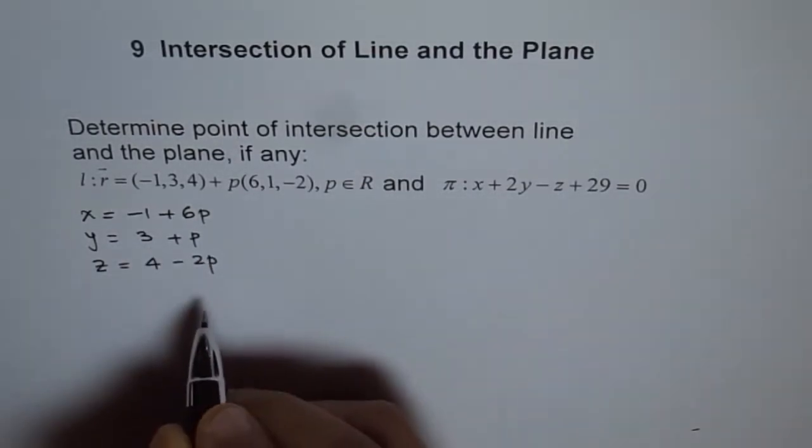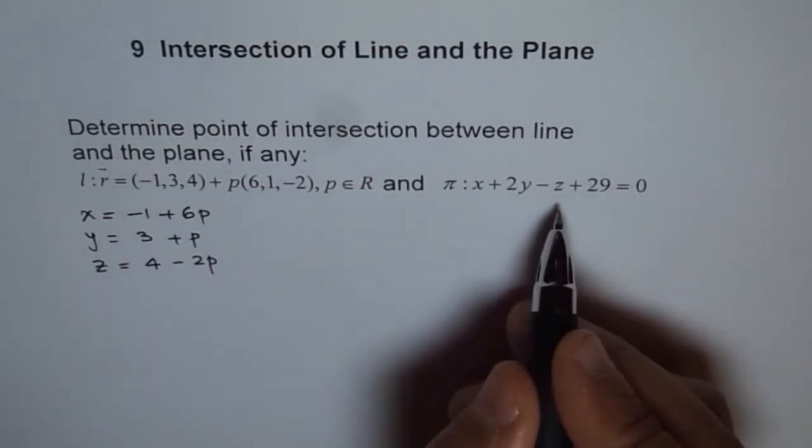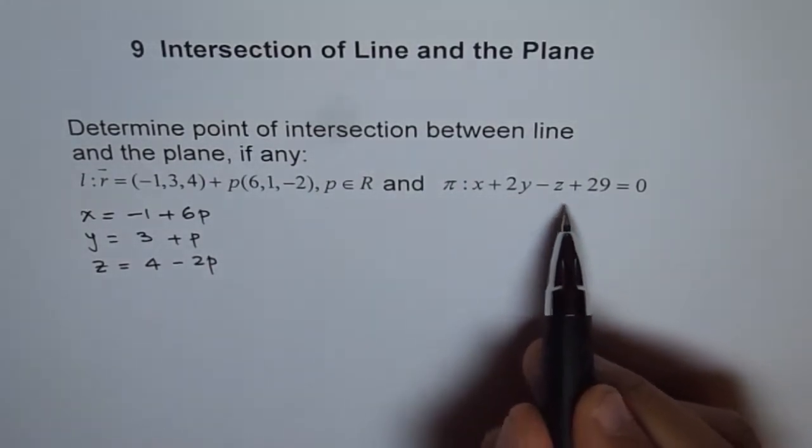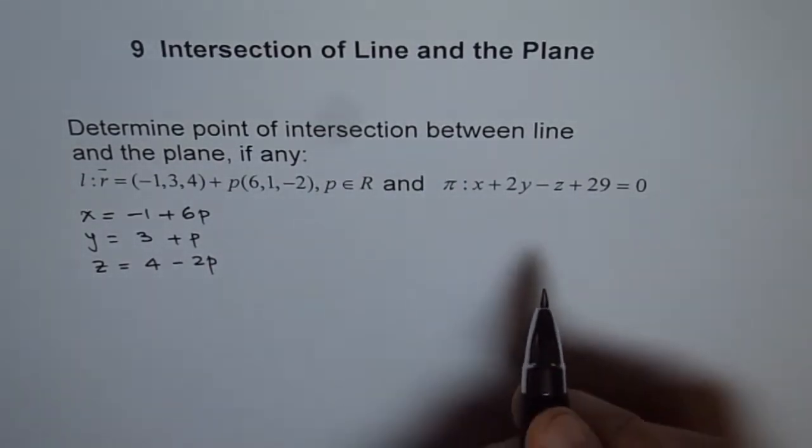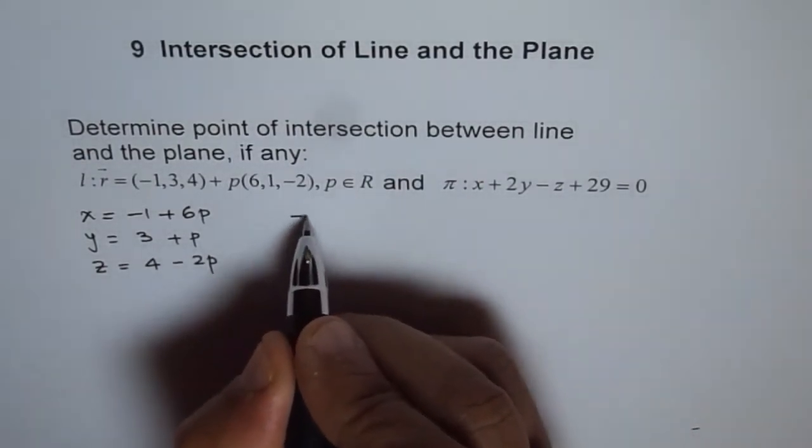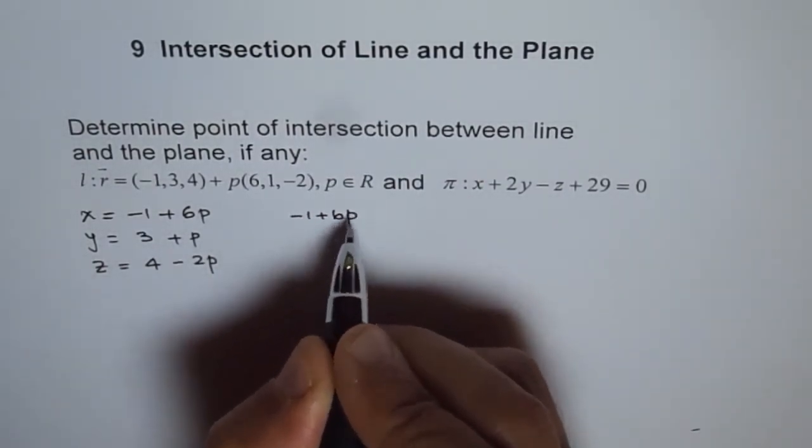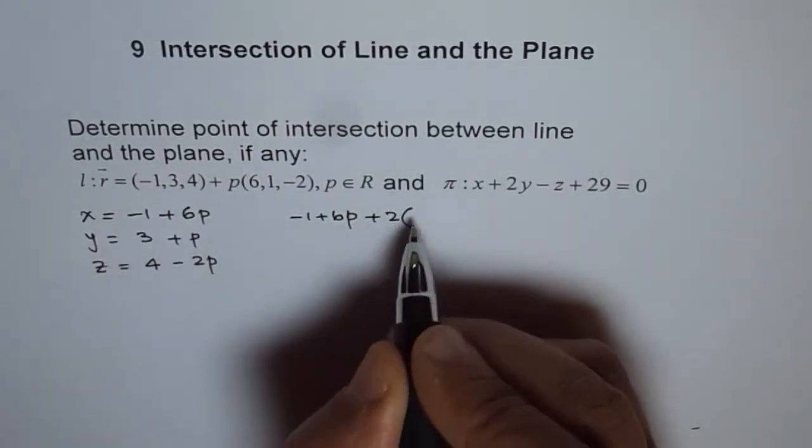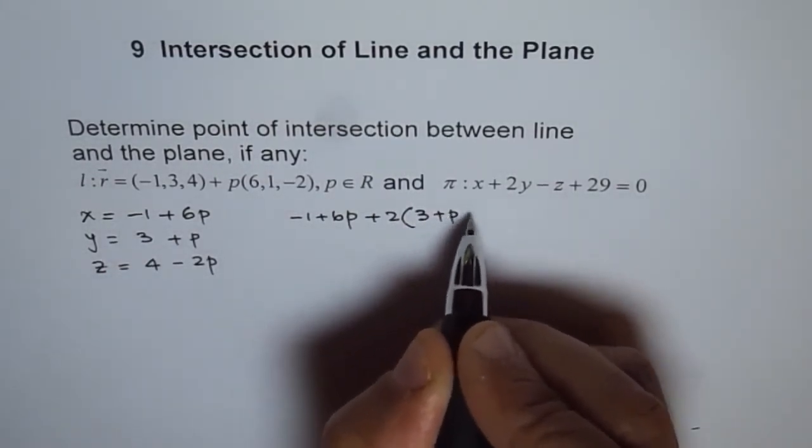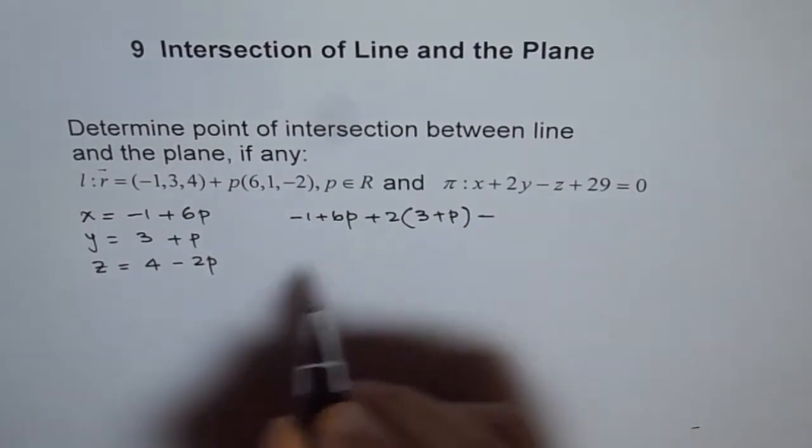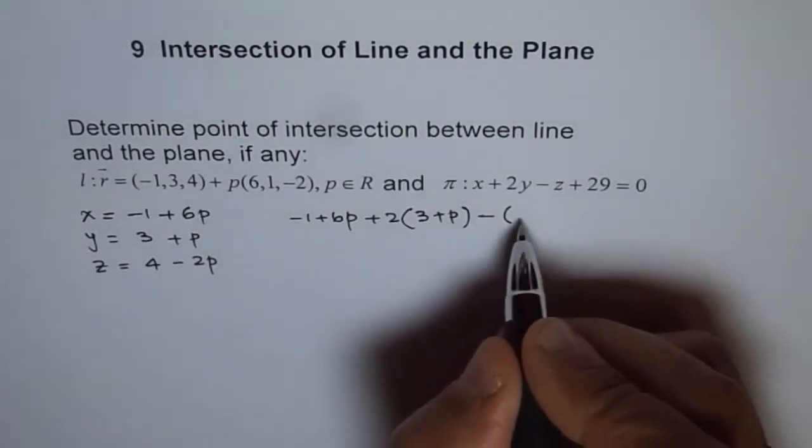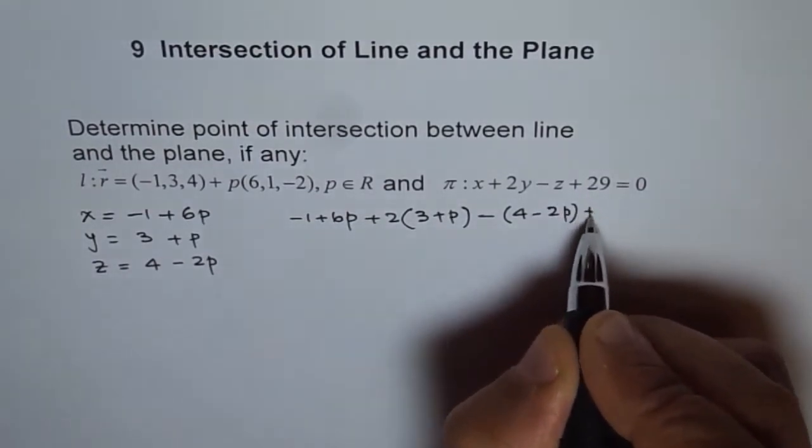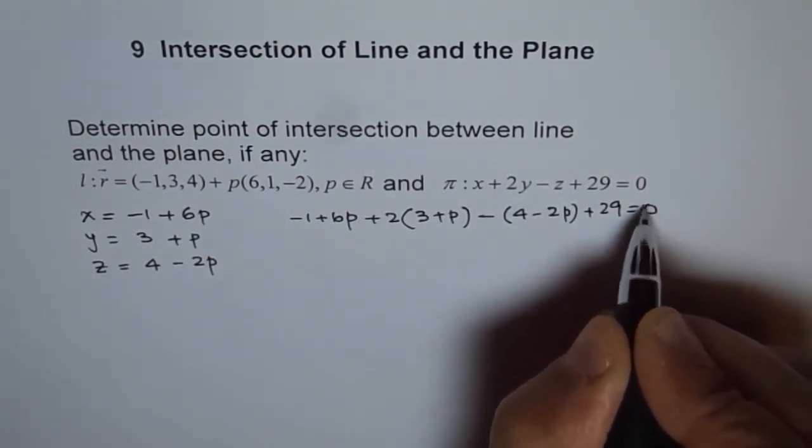So we'll plug these points in our equation for the plane, which is x + 2y - z + 29 = 0. So instead of x, we can write -1 + 6p + 2 times, instead of y, I'll write 3 + p, minus z, instead of z, we'll write 4 - 2p, plus 29 equals 0.